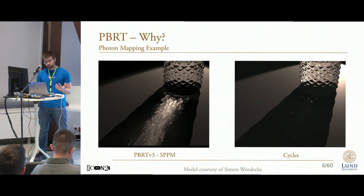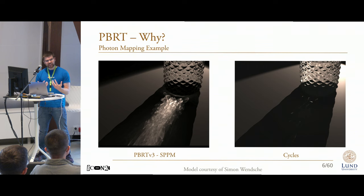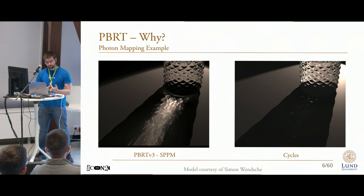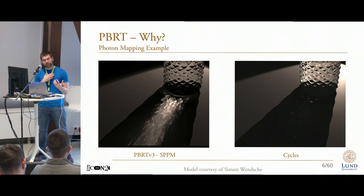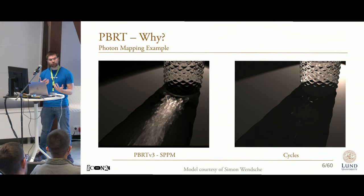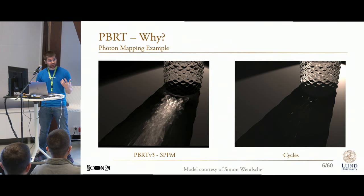Just to show you an example — this is one such case where it makes sense to have a specialized renderer. Scenes with a lot of caustics like this are still extremely challenging to render. To the left, I rendered this caustic-heavy example scene with a stochastic progressive photon mapping renderer in PBRT. And to the right, I did my best to try to recreate the same kind of caustics in Cycles, but even after digging through lots of rendering settings, I didn't really manage to get anything.